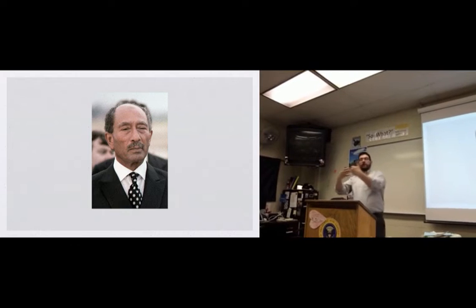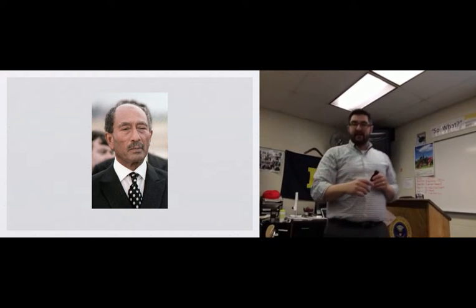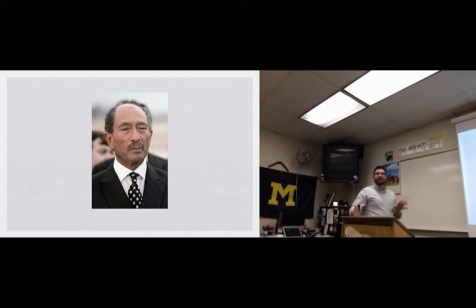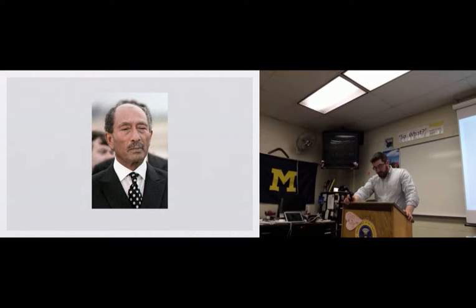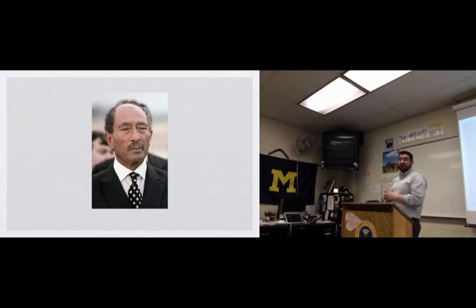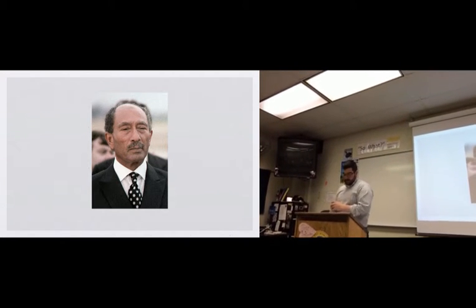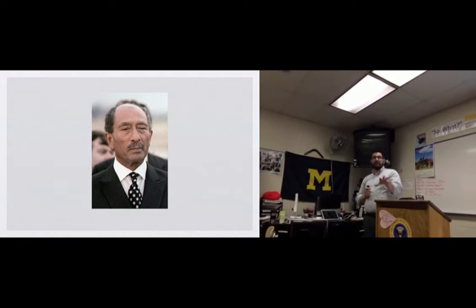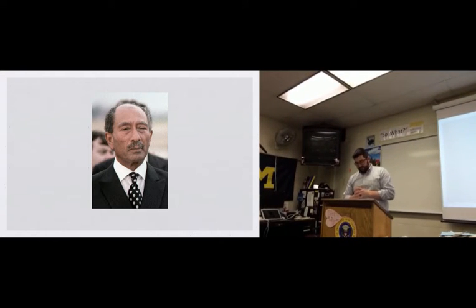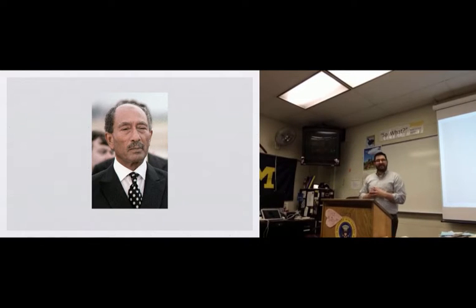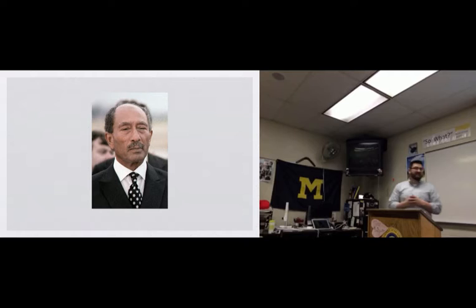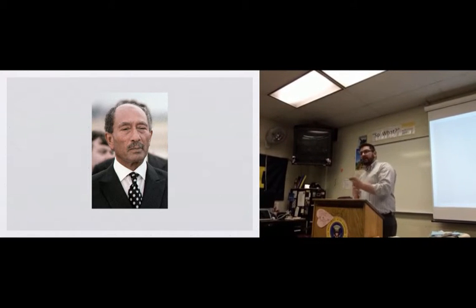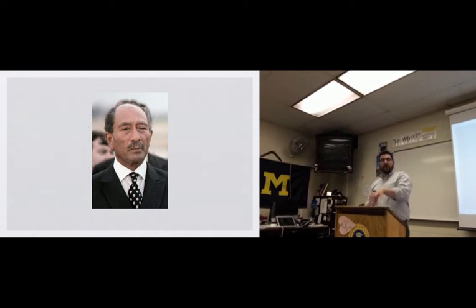Sadat moves closer to the United States, but one condition the Americans put on him is that he needs to distance himself from the Soviet Union, which had rebuilt the Egyptian military and established a naval base in Egypt on the Mediterranean after the Six-Day War. Sadat responds: in July 1972, he orders all Russian military advisors out of Egypt. At the same time, Sadat begins moving more closely with other Arab nations, especially Syria, and Egypt and Syria begin secret negotiations to launch a war against Israel.